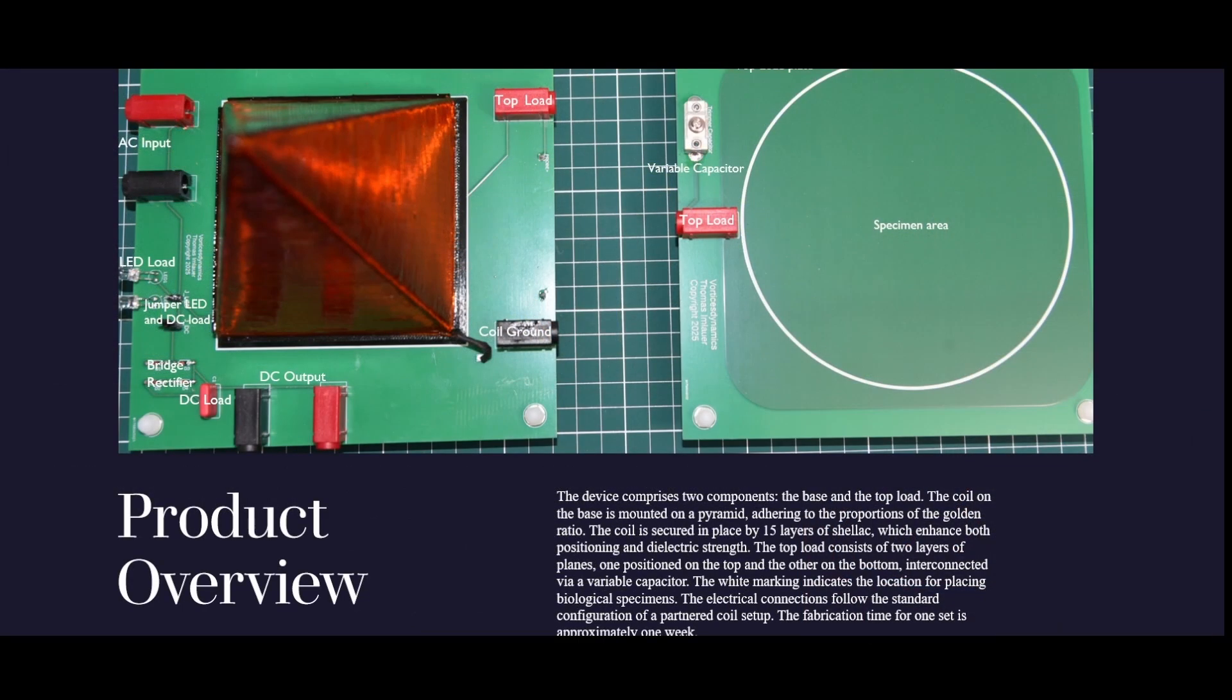The device comprises two components, the base and the top load. The coil on the base is mounted on a pyramid, adhering to the proportions of the golden ratio. The coil is secured in place by 15 layers of shellac, which enhance both positioning and dielectric strength.